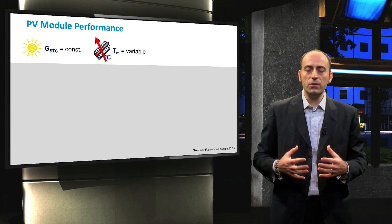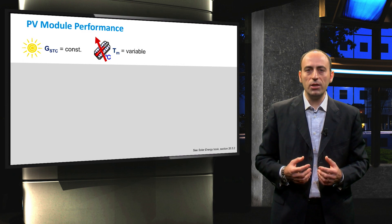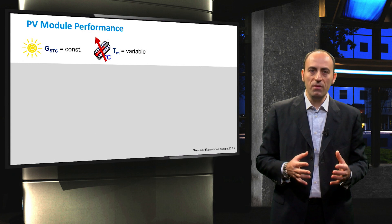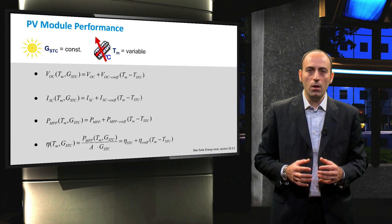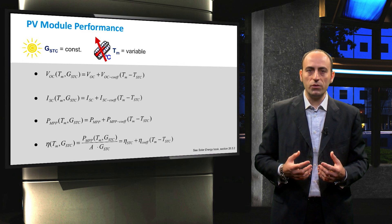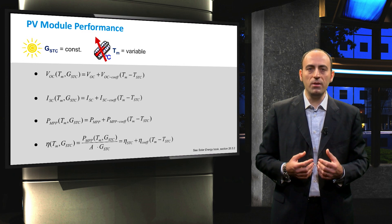First of all, we consider the case in which the solar irradiation is constant and the PV module temperature deviates from 25 degrees Celsius. The formulas to obtain the voltage, current and power parameters at different temperatures are listed here.